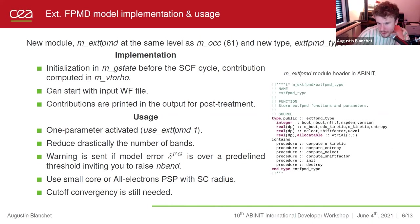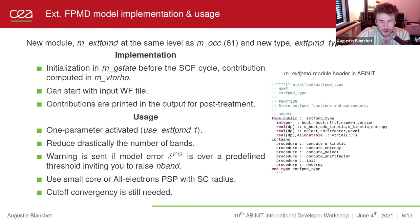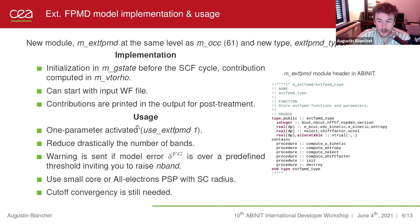For the implementation, a new module dedicated to the extended FPMD model is integrated at the same level as the occupation module in Abinit. The initialization is done before the SCF cycle, and the contributions are mainly computed in the vtorho module, just after the eigenvalues. It is also possible to start with an input wave function file, and contributions are printed in the output for post-treatment. For usage, it is one parameter activated: you just need to set xtfpmd to 1 in the input file. You also need to reduce the number of bands — for example, instead of 50,000 bands, you can use just 1,000, and the rest will be taken care of.